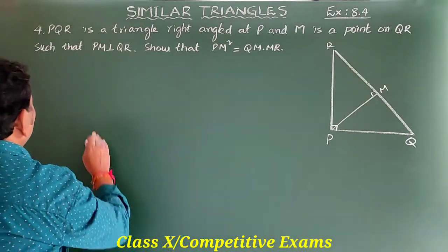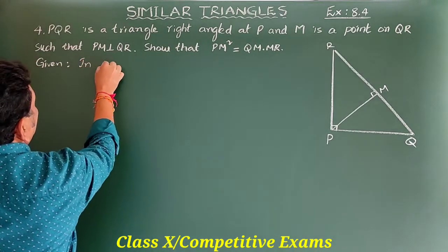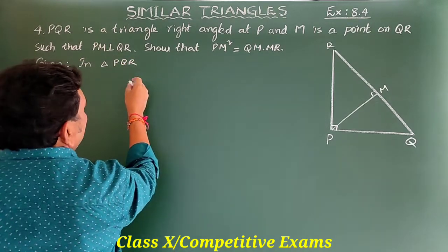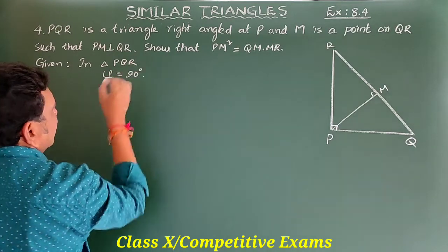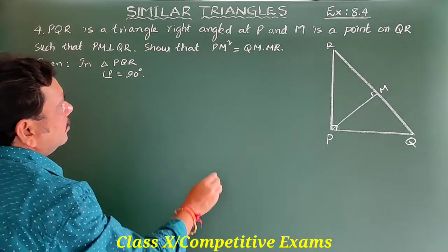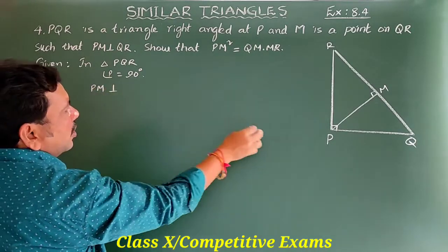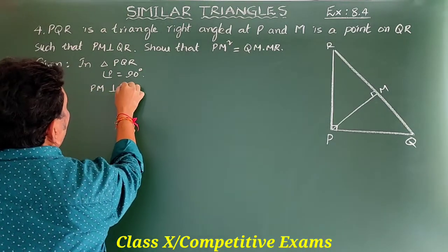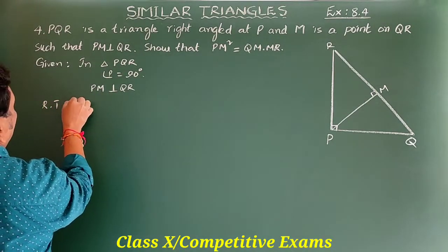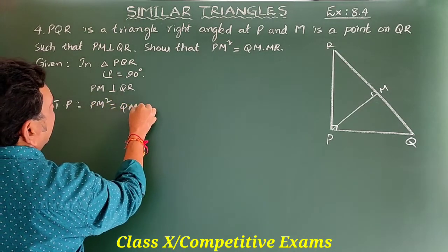Let us prove this. Given: in triangle PQR, angle P is equal to 90 degrees. PM is perpendicular to QR. We have to show that PM² = QM × MR.